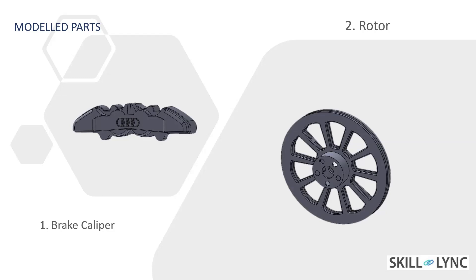The next part is the rotor. The brake rotor is a disc connected to the tire's hub that is used in a disc brake assembly. Boss Extrude, Cut Extrude, and Circular Pattern features were used to model this part.